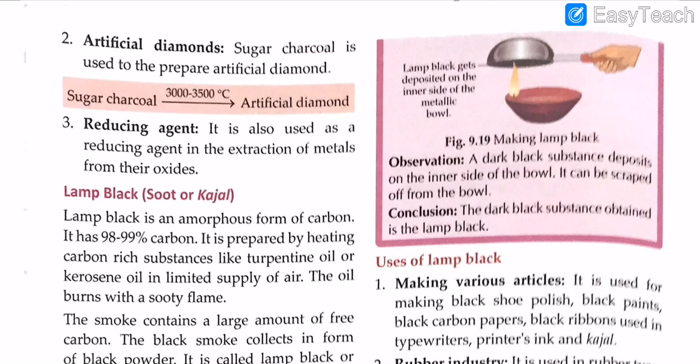Lamp black, also called soot or kajal, is an amorphous form of carbon with 98 to 99 percent carbon content. It is prepared by heating carbon-rich substances like turpentine oil or kerosene oil in a limited supply of air (not completely absent). The oil burns with a sooty flame, and the black smoke collects as a black powder called lamp black or soot.